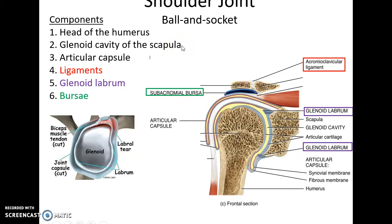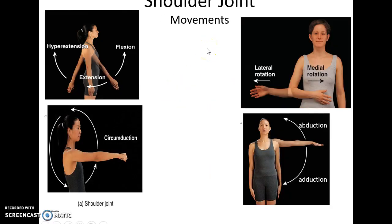The shoulder joint is a ball-and-socket joint. The head of the humerus fits into the glenoid cavity of the scapula. There is the articular capsule, ligaments, the glenoid labrum around the glenoid cavity, and some bursa and tendon sheaths. This allows for all kinds of movements: flexion, extension, hyperextension, circumduction, lateral and medial rotation, abduction, and adduction.